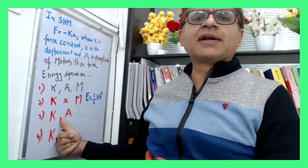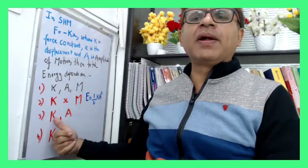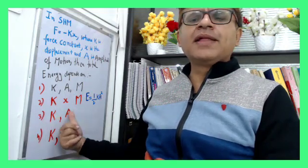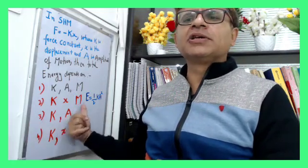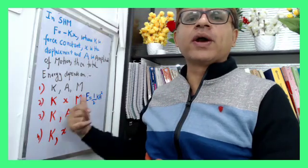If you see choice number three, it is the correct answer. The total energy is dependent on spring constant and the amplitude of the motion. It is the sum of U plus kinetic energy, equal to half ka square.